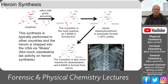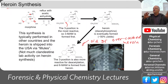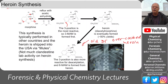If the reaction cooks too long, the 3-position deacetylates and you're left with 6-monoacetylmorphine (6-MAM). This is a chemical marker for old or overcooked heroin. By looking at the ratio of 3-MAM to 6-MAM in a heroin sample, you can make judgments about its age or manufacturer source.